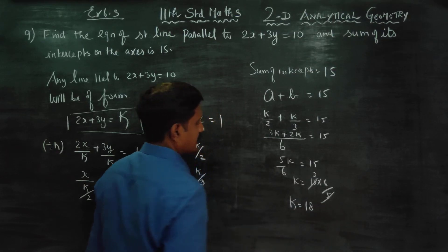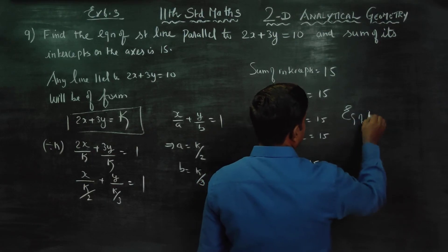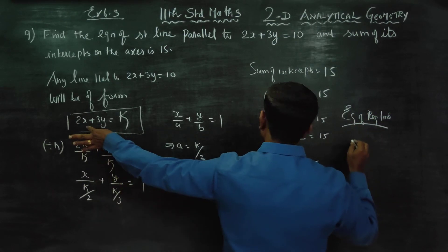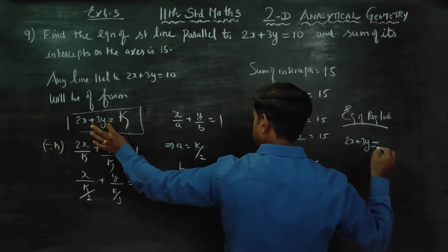Now substitute k into the equation. Therefore, equation of required line is 2x plus 3y equals k, where k equals 18.